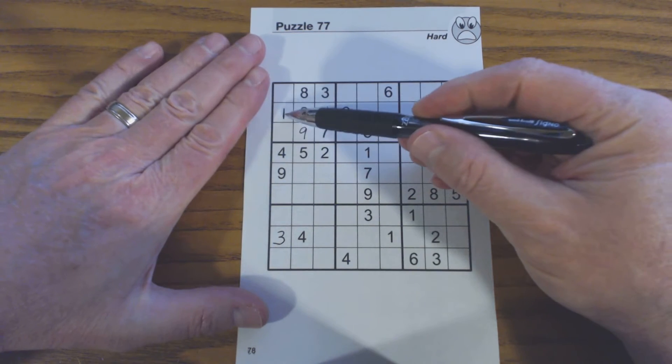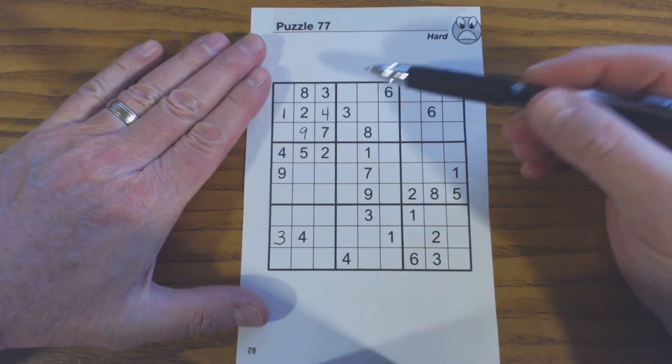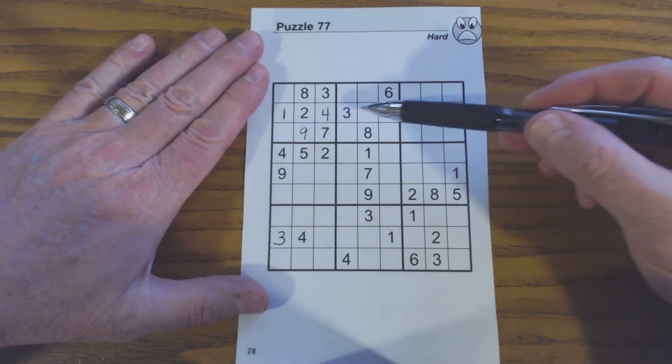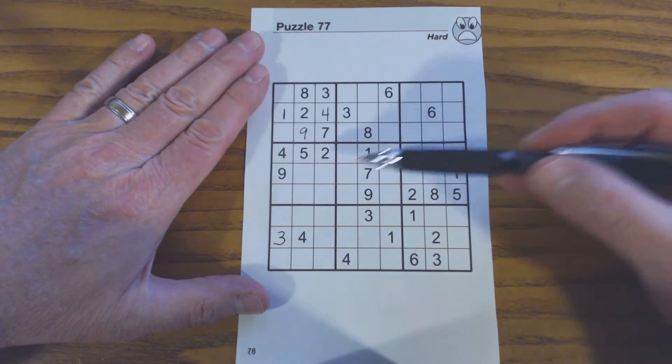You'll notice that there's a one already filled in here, but how did we find that one? There are no ones in this square or this square yet.